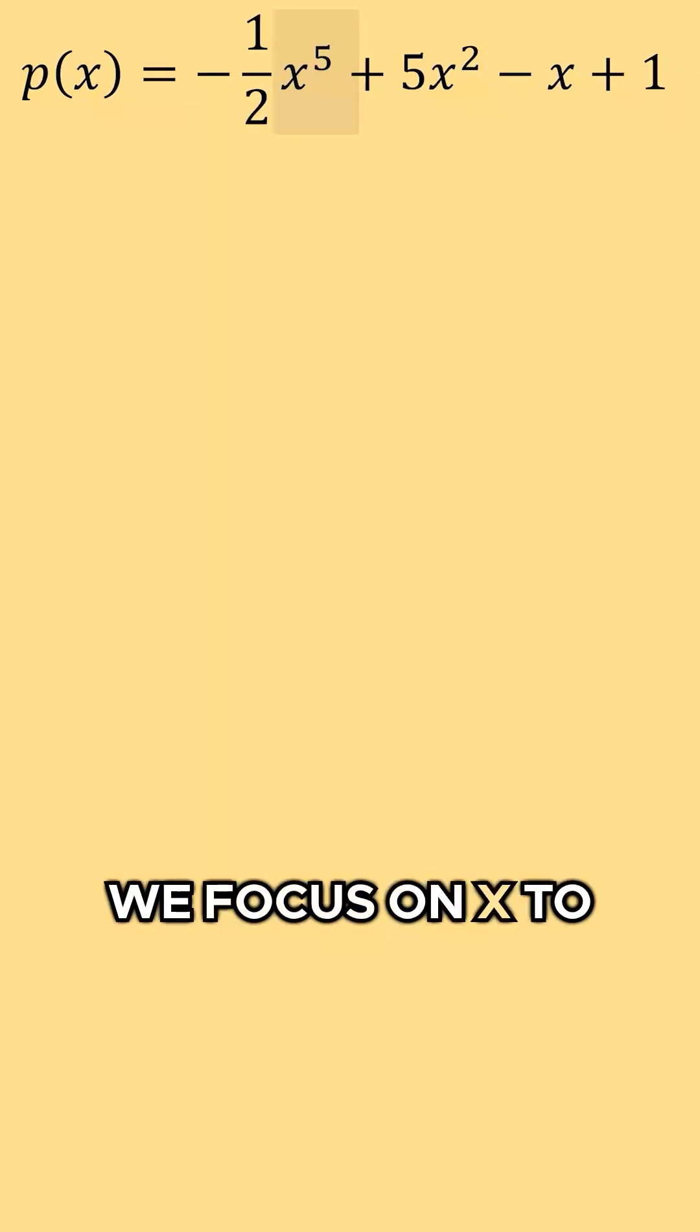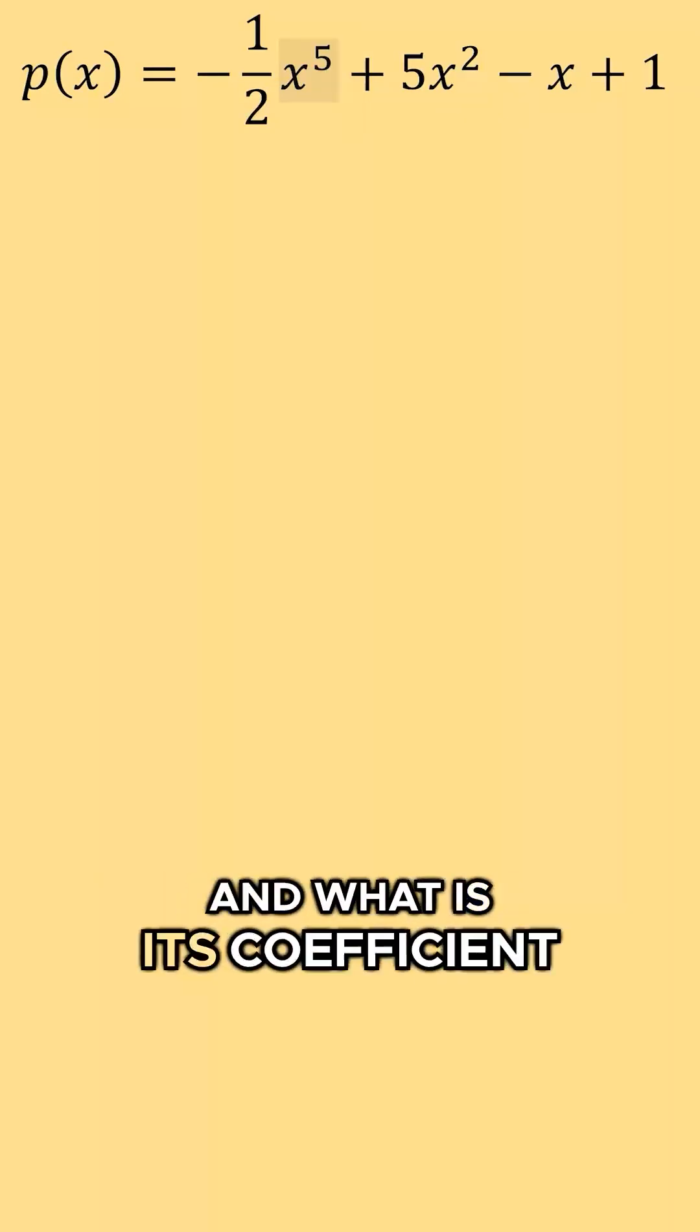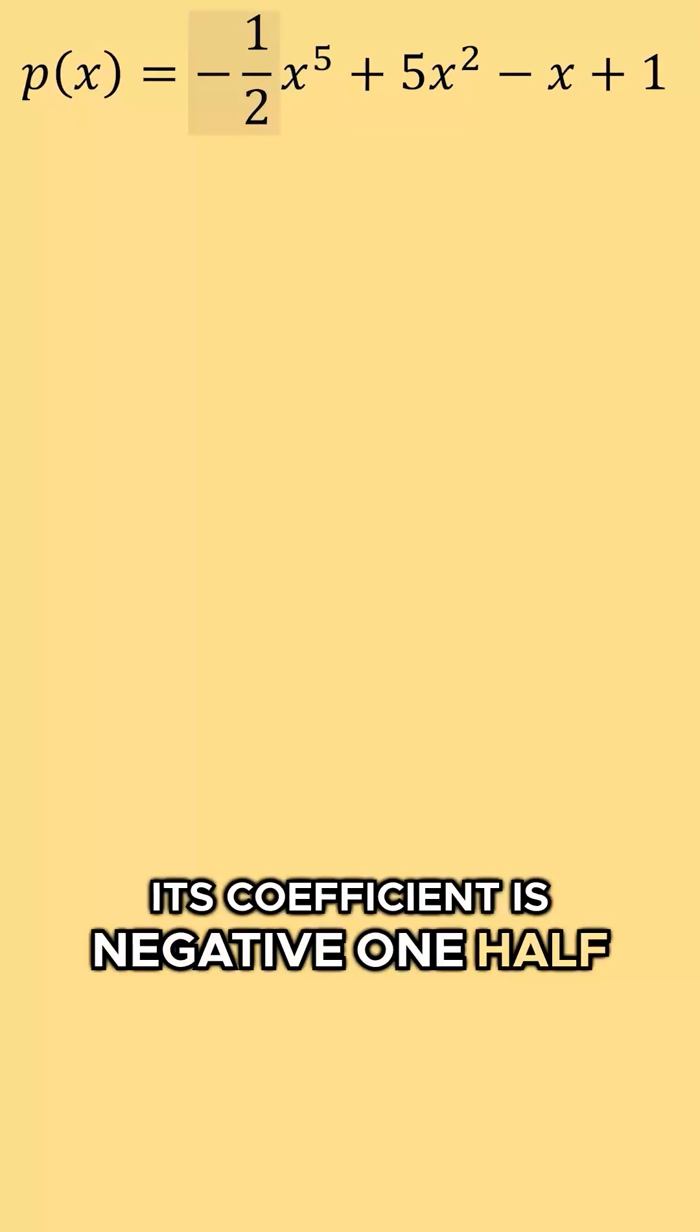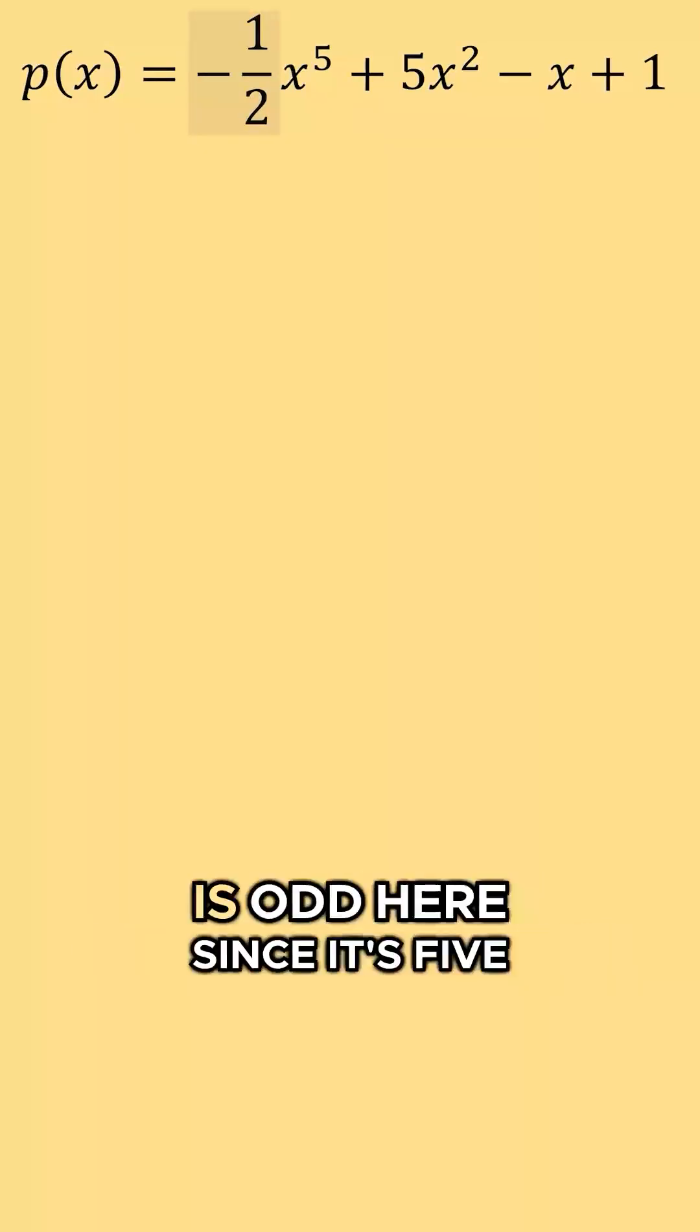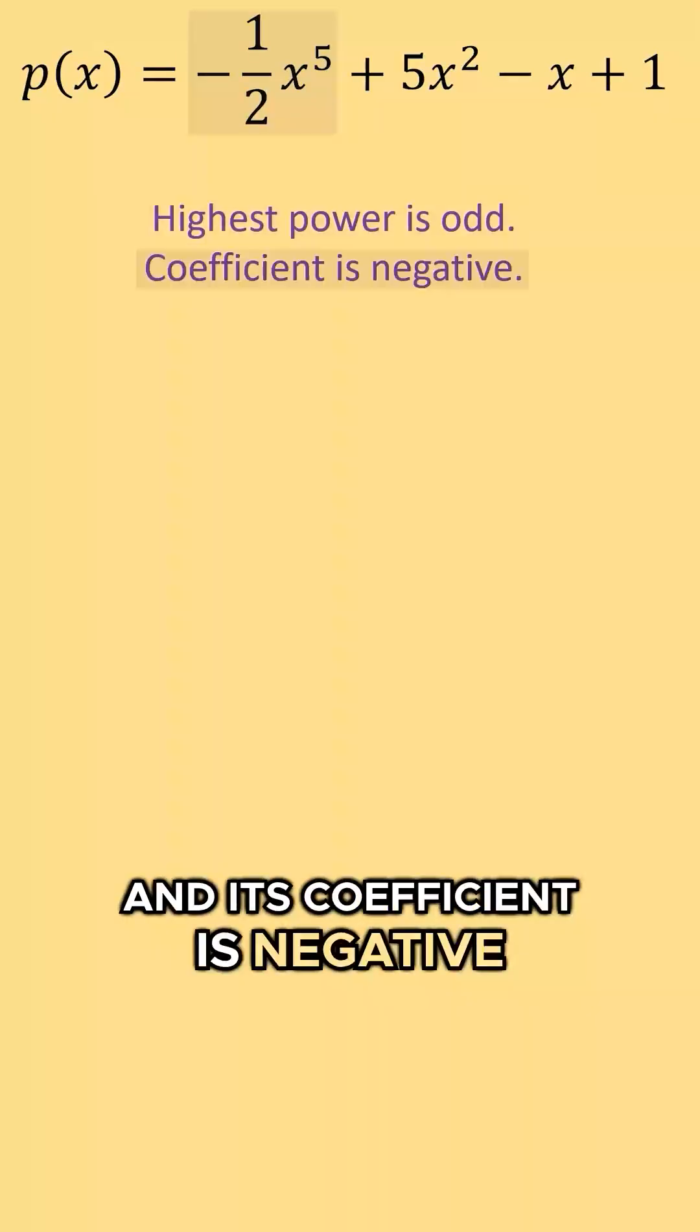We focus on x to the fifth power and its coefficient. The coefficient is negative one-half. So that means our highest power is odd here since it's five, and its coefficient is negative.